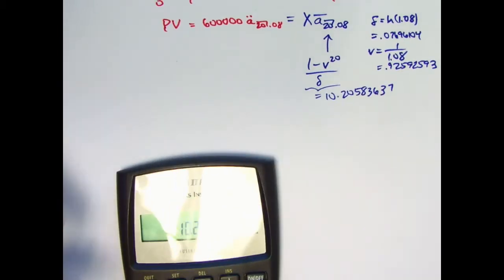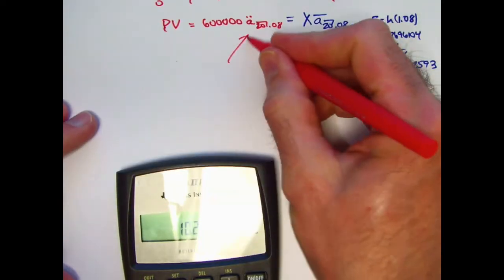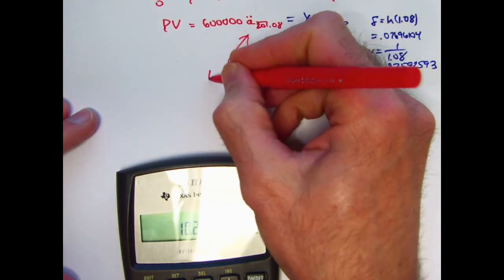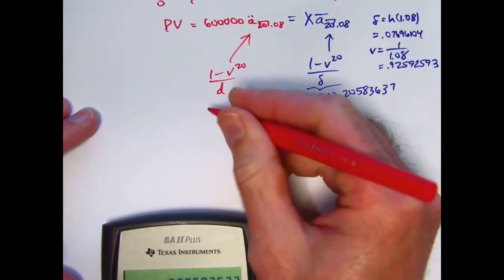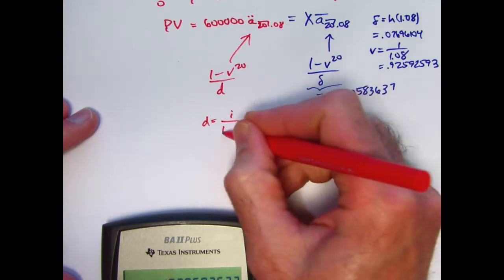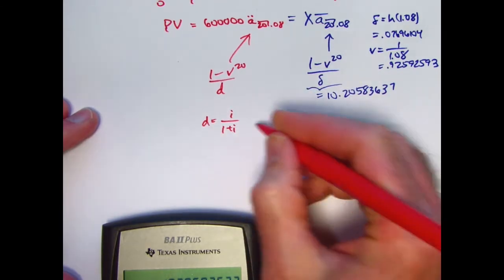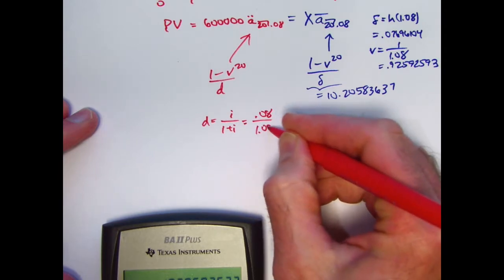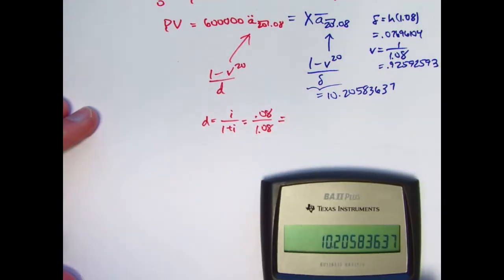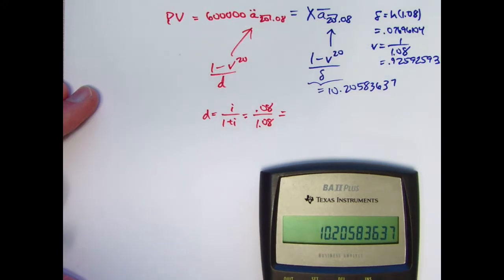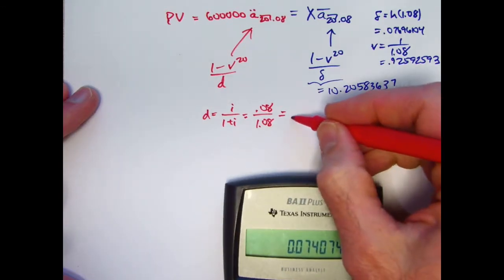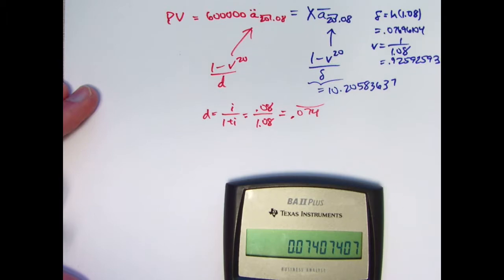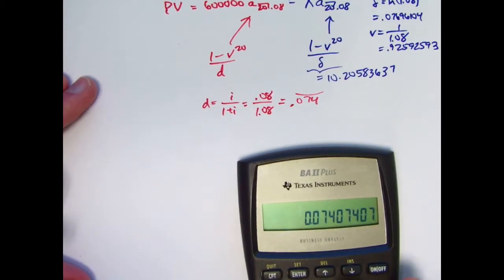All right, now let's figure out a double dot here. The formula for that is going to be 1 minus v to the 20th divided by d, where d is the discount rate, is going to be i over 1 plus i, 0.08 divided by 1.08. It looks like it's probably repeating, 0.074 repeating. I'll just go ahead and assume that.